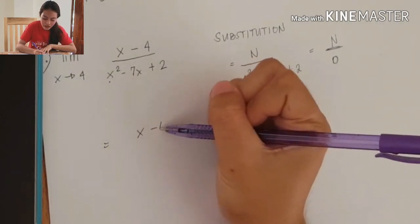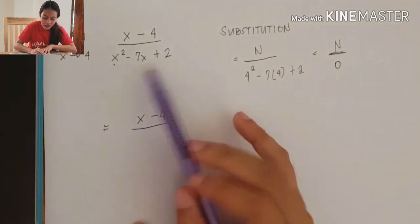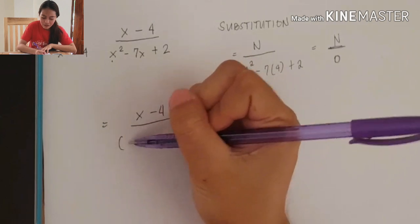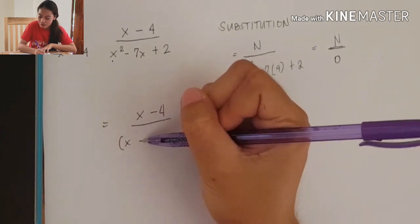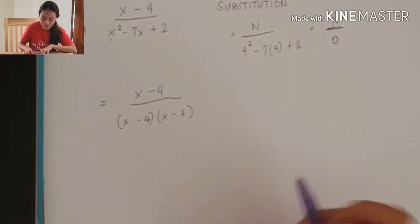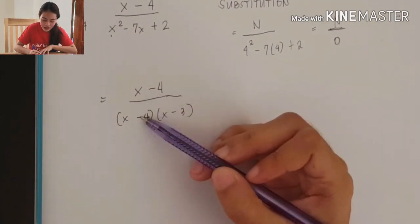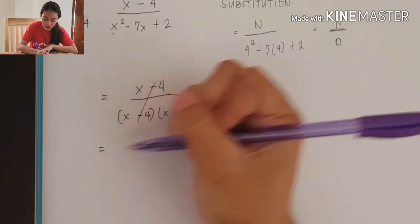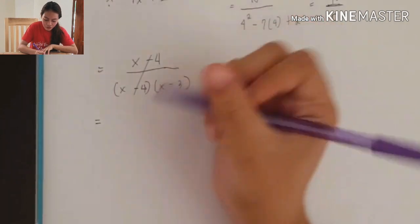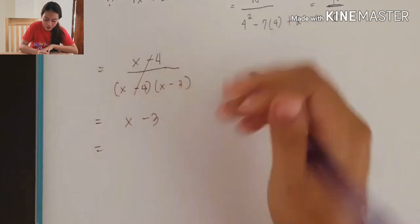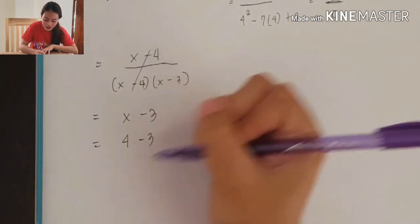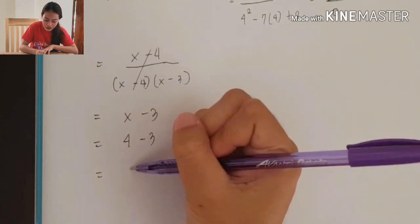Using the algebraic technique, we factor the denominator x² − 7x + 2. As we can see, the denominator factors as (x − 4)(x − 3). The (x − 4) in the numerator and denominator cancel, leaving 1 over (x − 3). Substituting x = 4 gives 4 − 3 = 1. So the limit is 1.